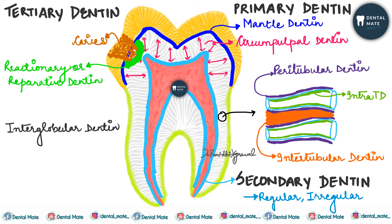Interglobular dentine is the dentine which contains hypomineralized areas between the mineralized globules. Globular dentine refers to hypermineralized areas of dentine containing hypermineralized areas within the mineralized spicules.